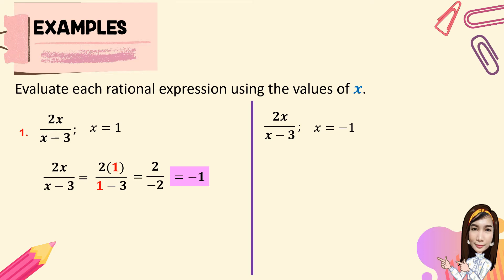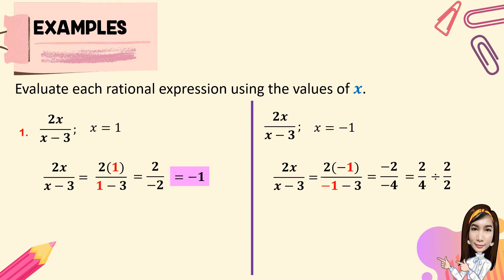When x is equal to negative 1, we substitute: 2 times negative 1 all over negative 1 minus 3. So 2 times negative 1 is negative 2, and negative 1 minus 3 is negative 4. Negative divided by negative is positive, so we have positive 2 over 4. Dividing both numerator and denominator by the greatest common factor, which is 2: 2 divided by 2 is 1, and 4 divided by 2 is 2. So the value of 2x over x minus 3 when x equals negative 1 is 1 over 2, or one half.